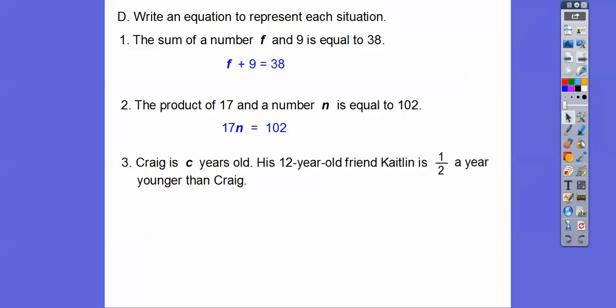Alright, Craig is C years old. Let's see, his 12-year-old friend, Caitlin, is a half a year younger than Craig. So what we're going to do is we know Caitlin is 12 years old, and she's a half a year younger than Craig. So Craig's age, which is this, minus the half a year will give us Caitlin's age right there because she's a half a year younger. So that would be C minus 1 half equals 12. A little tricky on that one.